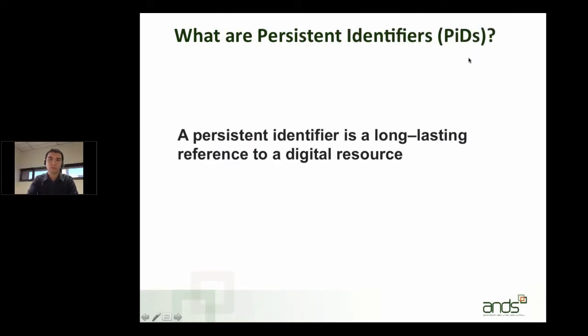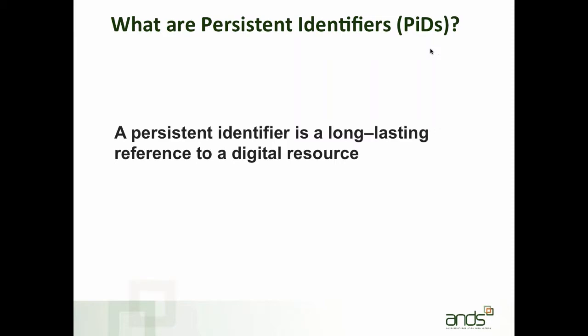A persistent identifier is simply a long-lasting reference to a digital resource. Even if the resource moves location on the web, the persistent identifier is there to make sure the link always resolves. If a PID is used as a citation link in scholarly literature, it will always resolve to information about the resource — either a descriptive metadata page, the resource itself, or information about the removal of the resource from the web.